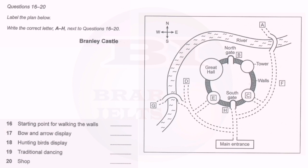If you want to get a good view of the whole castle, you can walk around the walls. The starting point's quite near the main entrance. Walk straight down the path until you get to the south gate, and it's just there. Don't go on to the north gate. There's no way up from there.